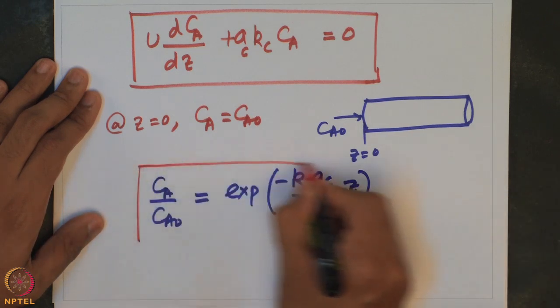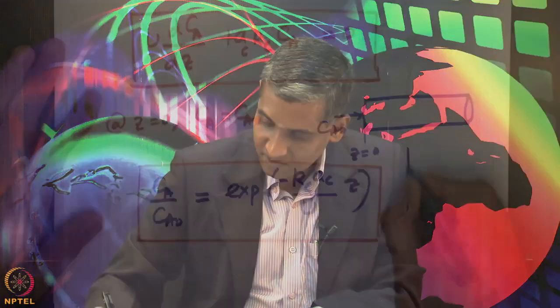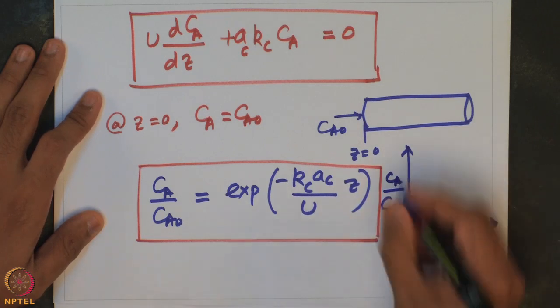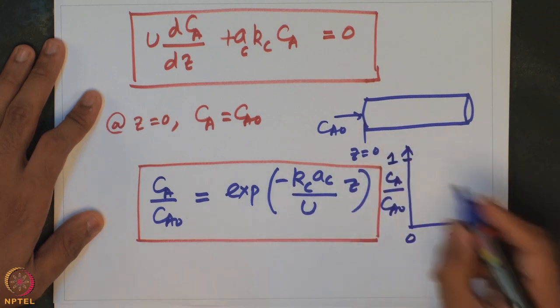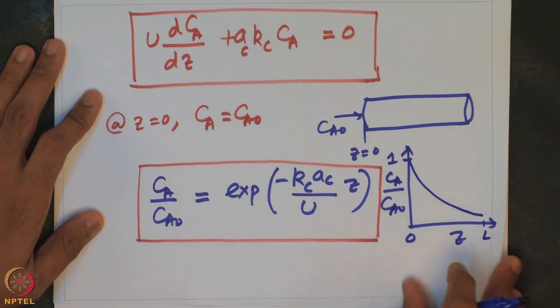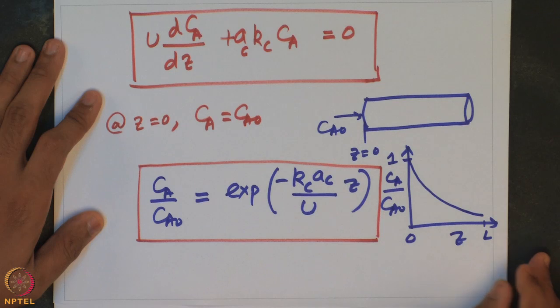This result is valid when external mass transport controls the overall rate and the surface reaction is very rapid. Plotting position z versus Ca/Ca0, at z equals 0 the concentration is 1, and it exponentially decreases toward the reactor exit. If we know these constants, we can find the concentration at different locations inside the reactor.